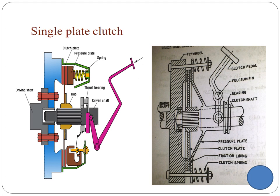If you press the pedal, the fork arm actuates the thrust bearing, which presses the pressure plate. If you press the pressure plate, there is a disengage between the frictional plate and the pressure plate, and also between the flywheel and the frictional plate. If disengaged, the clutch is disengaged, and normal operation takes place for the engine and transmission shaft without circulating the clutch disc. If you add more frictional plates, we call it a multi-plate clutch.